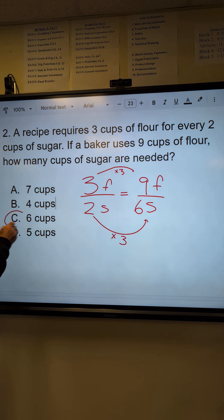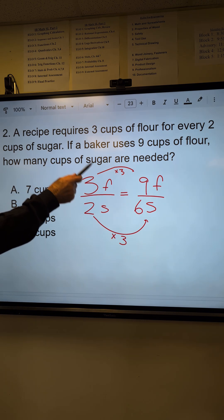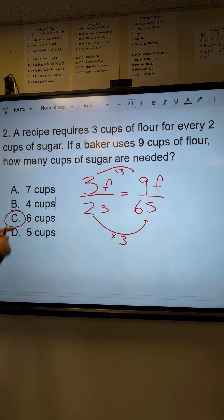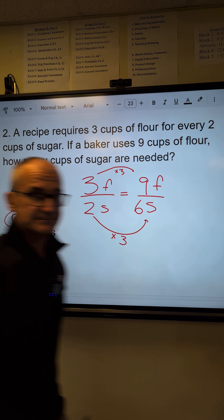Correct answer, C. Let me double check that. Three is to two, as nine is to six. They are equivalent, so that's the correct answer. Thank you.